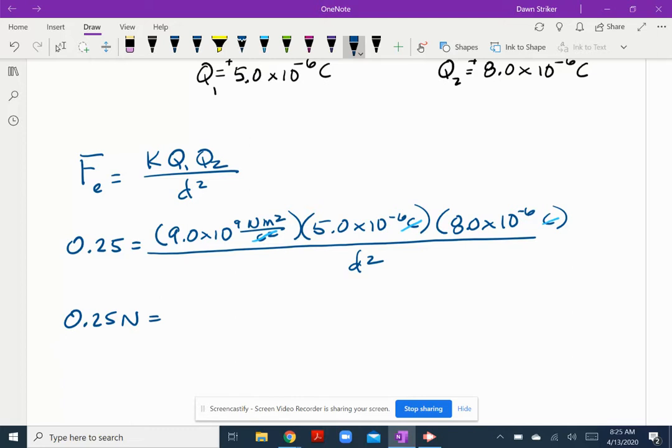And so 9 times 10 to the 9, using my calculator, you could calculate with me because sometimes I make mistakes. 9 times 10 to the 9 times 5 times 10 to the negative 6 times 8 times 10 to the negative 6. And I get 0.36. So 0.36, and again, that is a Newton meter squared over D squared. So there I am.